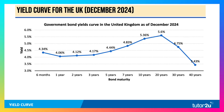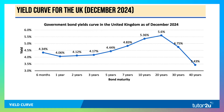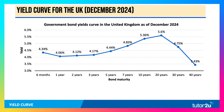Here's the yield curve for the UK as of the end of December 2024. So if the government borrows for six months, they're paying 4.34%; for one year, slightly less actually, 4%. And then the bond yield curve starts rising, as you'd expect, up to the 20-year bond yield. It comes down over 30 to 40 years, but over the two to 20-year period the bond yield curve is rising.